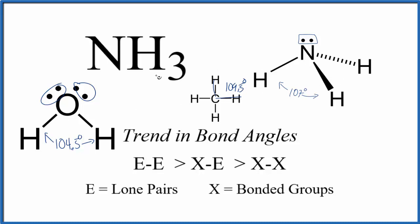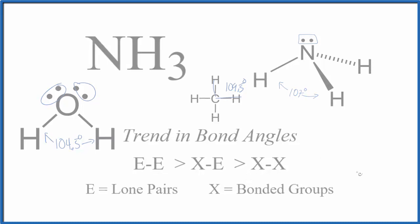This is Dr. B looking at ammonia, the bond angles for ammonia, and why it turns out to be 107 degrees. This table here with the trends, that can help you understand this a lot better. Thanks for watching.